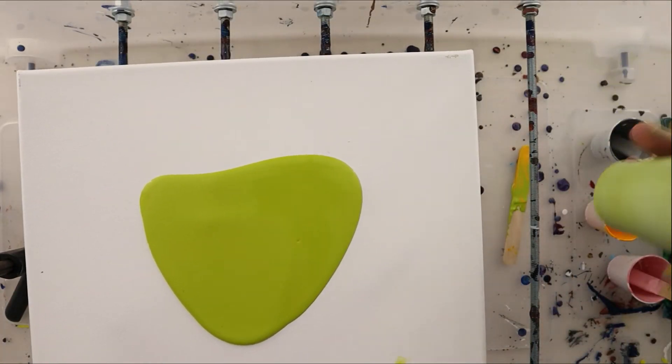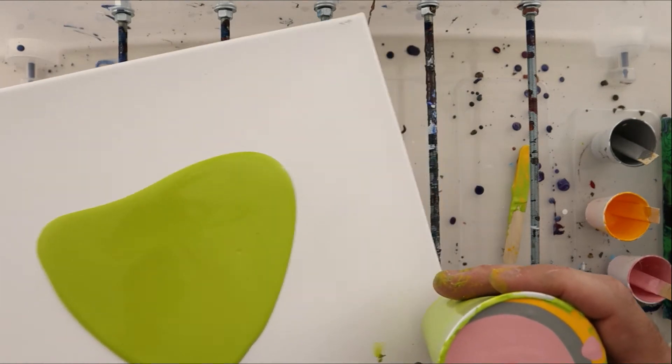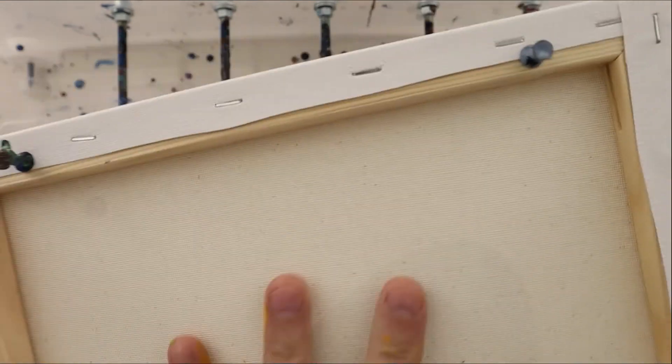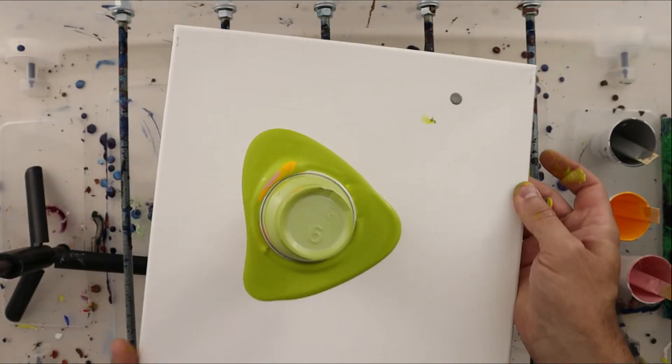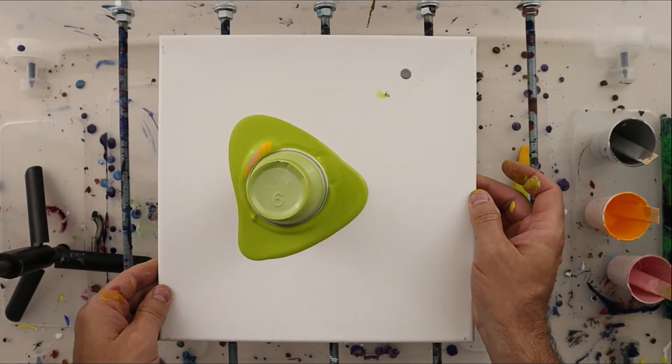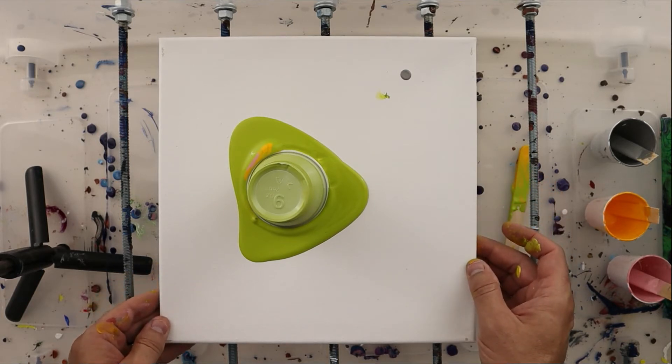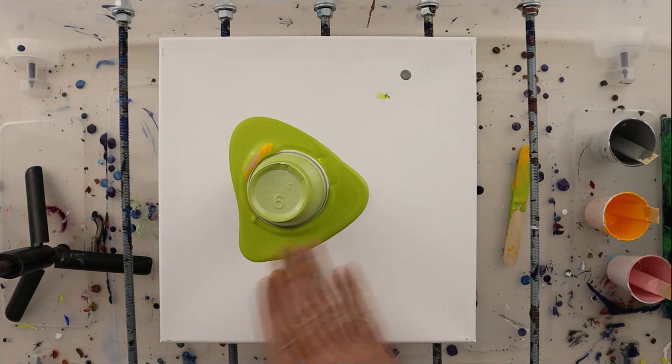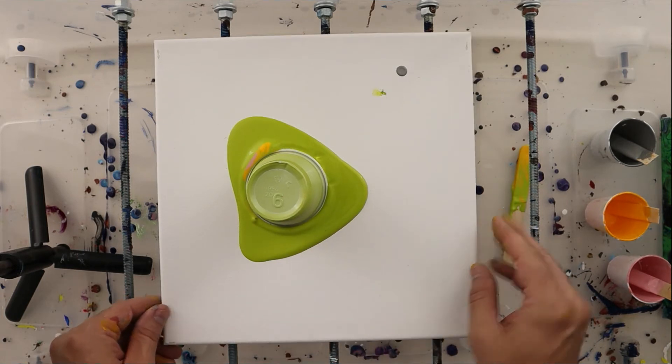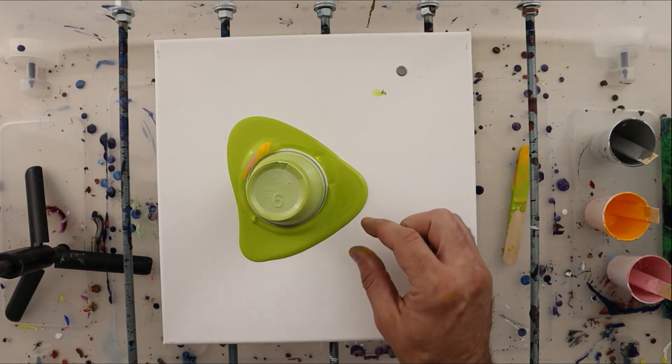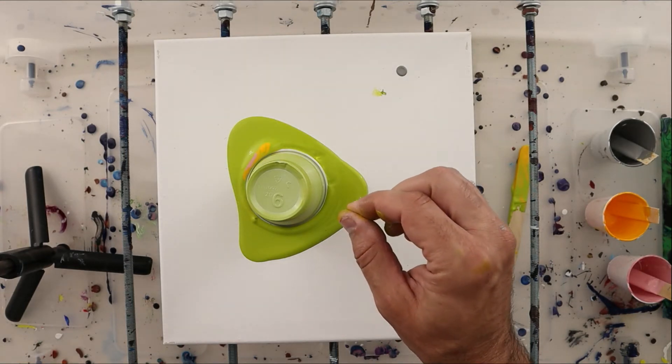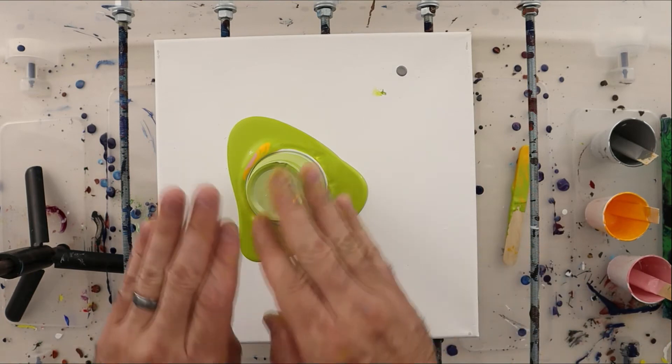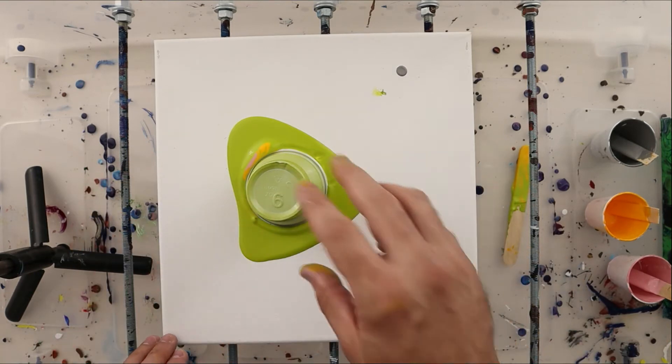So I'm going to take my cup here, pop this down and flip that over quick. So you don't have a lot of working time with this pouring medium. One nice thing about filling your cup completely full when doing a flip cup is then the paint isn't traveling as much, it's not mixing as much, but the silicone will kind of creep up through. So you get that better effect and less muddiness, less color mixing.